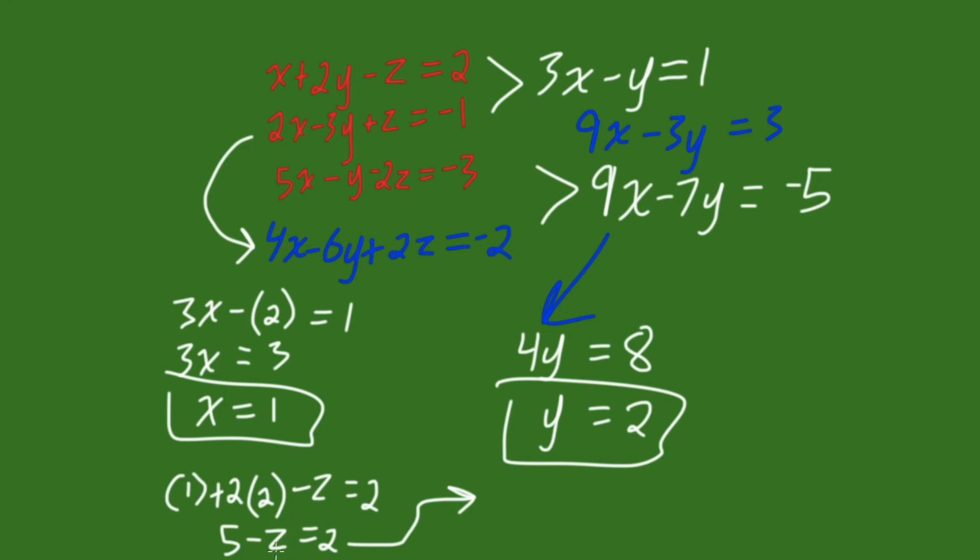And, let's get z all by itself. So, if we subtract 5 from both sides, that gives us minus z equals 2 minus 5, which is minus 3. And, let's get rid of that negative by timesing both sides by negative 1, giving us z equals 3.